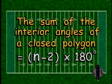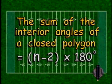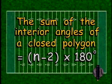The rule for checking the angles of any object is that the sum of the interior angles of a closed polygon is equal to the number of sides minus two, times 180 degrees.